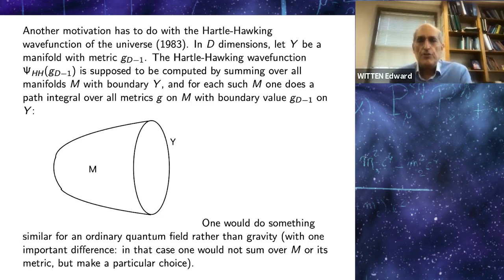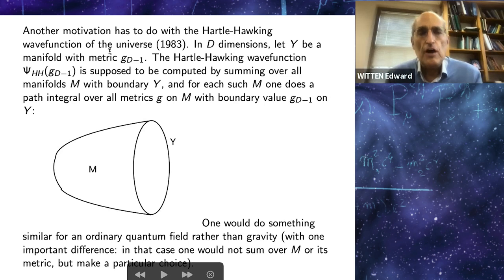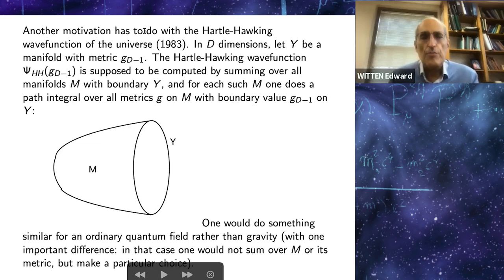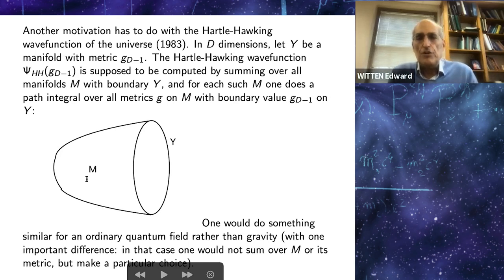Here's another motivation for complex metrics. It has to do with the Hartle-Hawking wave function of the universe. In d dimensions, let Y be a d minus 1 manifold with a metric called g_{d-1}. The Hartle-Hawking wave function is supposed to be a function of d minus 1 metrics on a fixed manifold Y. You're supposed to compute it by summing over all manifolds M of dimension d whose boundary is Y, and for each M, you do a path integral over all metrics on M whose boundary value is g_{d-1}. You complete the picture by picking an M and extending the metric of Y over M, and then you do a gravitational path integral over all such metrics. That's supposed to give the Hartle-Hawking wave function.